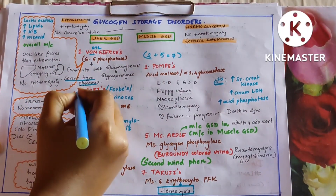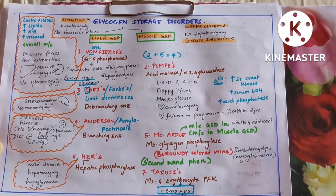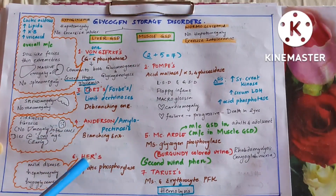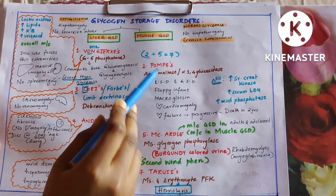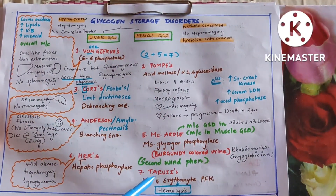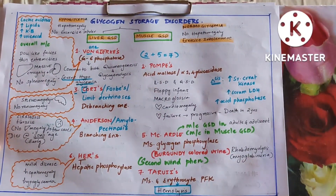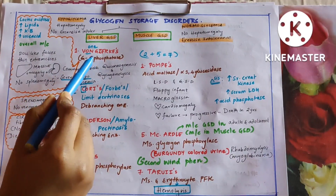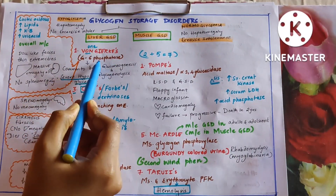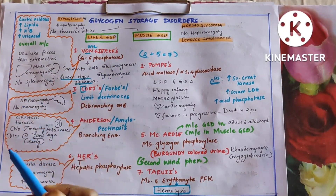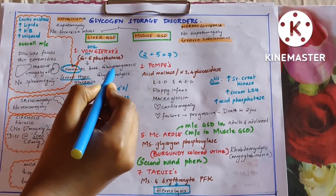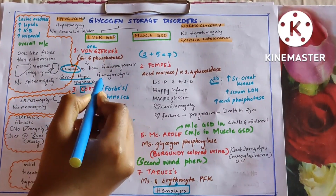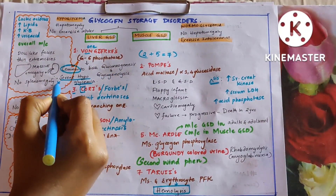Type 1 — Von Gierke's — is due to glucose-6-phosphatase (G6P) deficiency. Type 3: C for Cori's. Type 4: D — Anderson has D — branching enzyme. Type 6 is Hers' disease. Von Gierke's: glucose-6-phosphatase is common to both glycogenolysis and gluconeogenesis, so since two cycles are hampered it leads to severe hypoglycemia.